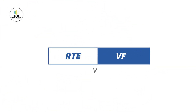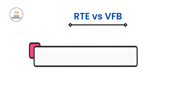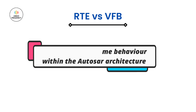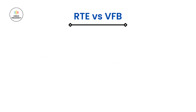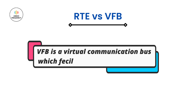Now let's look at the differences between Runtime Environment and Virtual Functional Bus. The first difference is based on function and purpose. The RTE manages the runtime behavior of the software component within the AUTOSAR architecture — it provides an execution environment, schedules tasks, handles inter-component communication, and manages memory and error handling. On the other hand, Virtual Functional Bus acts as a virtual communication bus that facilitates the exchange of data and actions between software components, particularly in distributed automotive systems.